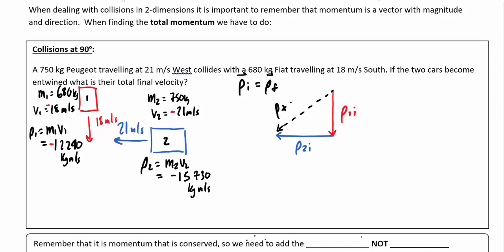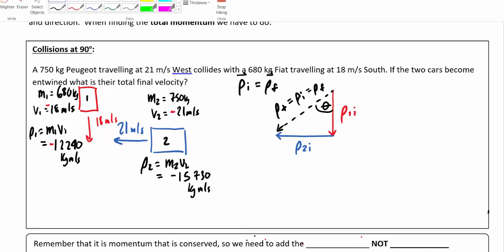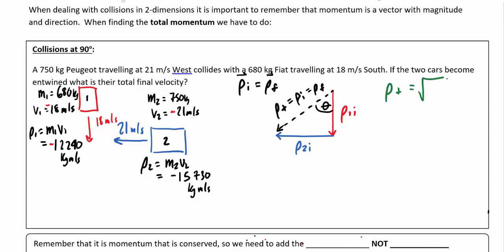This represents the total momentum of the system. Since momentum is conserved, the total momentum can be thought of as the total initial momentum — the two cars moving separately — or as the final momentum of the stuck-together cars heading off in a southwest direction. To solve for the total momentum, I can use Pythagoras: P total equals the square root of P1 initial squared plus P2 initial squared, which works out to about 19,947 kilogram meters per second.